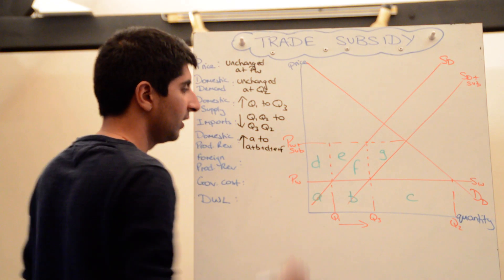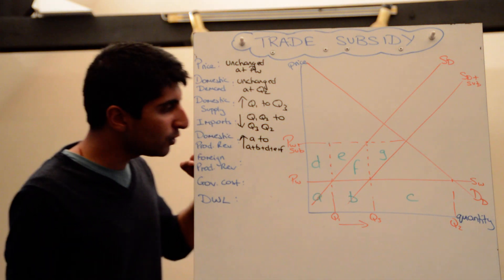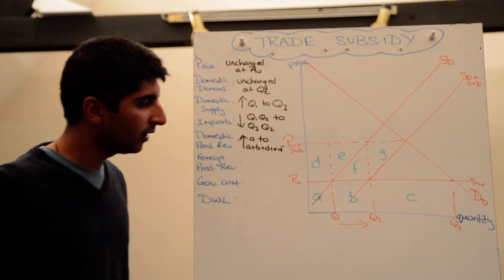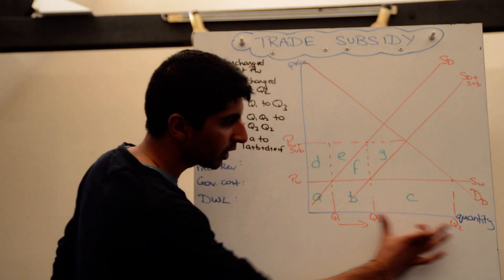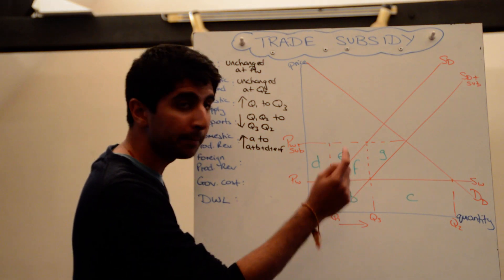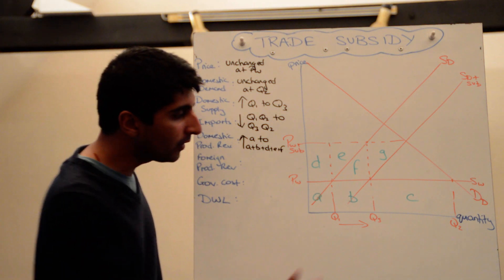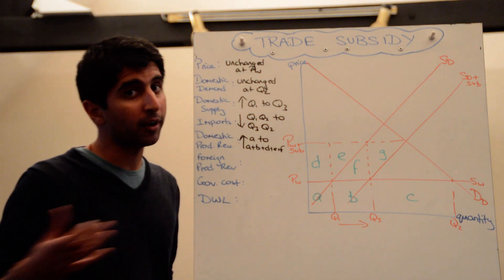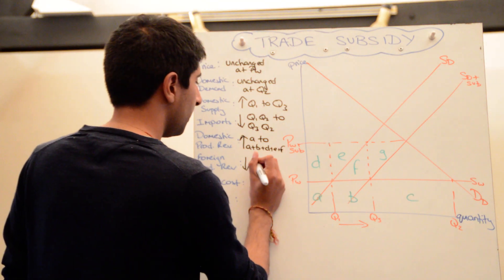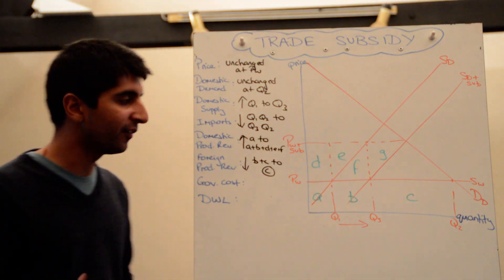Foreign producer revenue - well before, the imports coming in and therefore how much foreign producers were selling to this nation was the difference between q1 and q2 at price pw. So before, foreign producers were getting b plus c. Now the quantity of imports has actually fallen, so foreign producers are now only selling q3 q2. The price stays the same at pw, they're only getting c. So foreign producer revenue has fallen from b plus c to now just c, so there's a fall there for these guys, they're losing out.